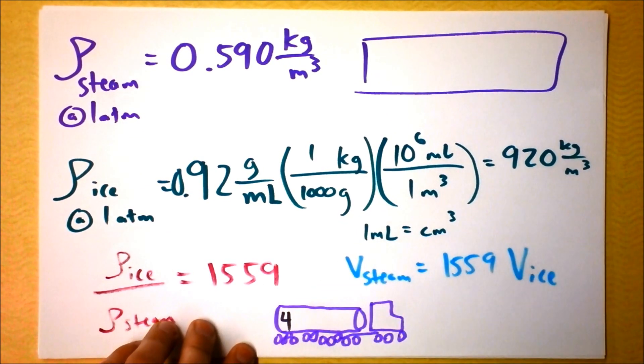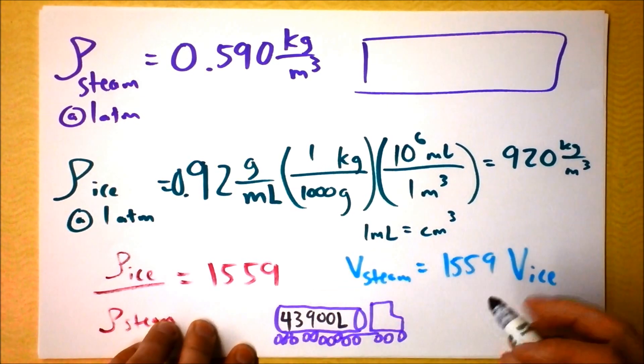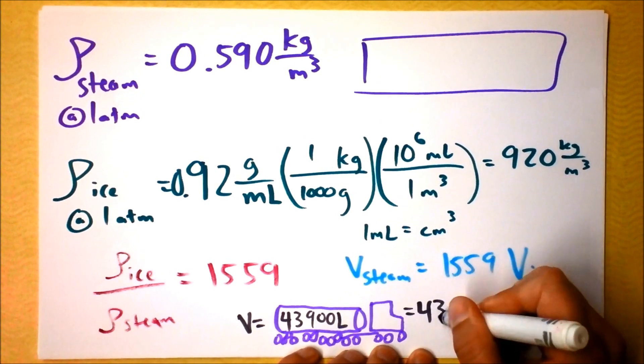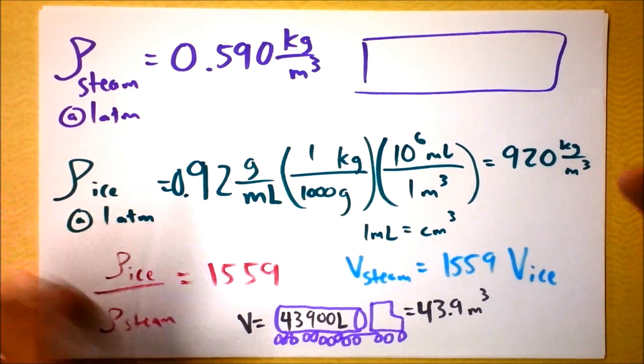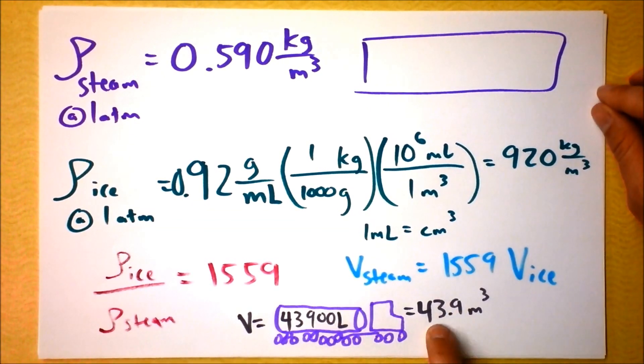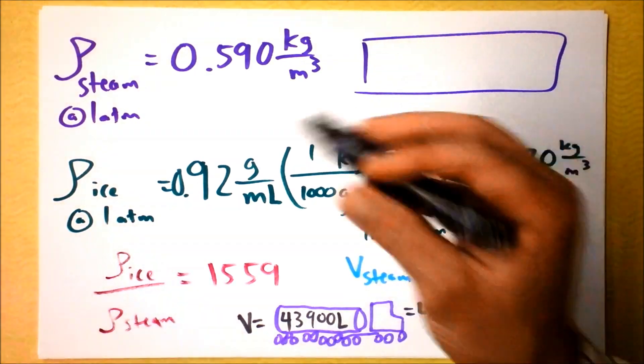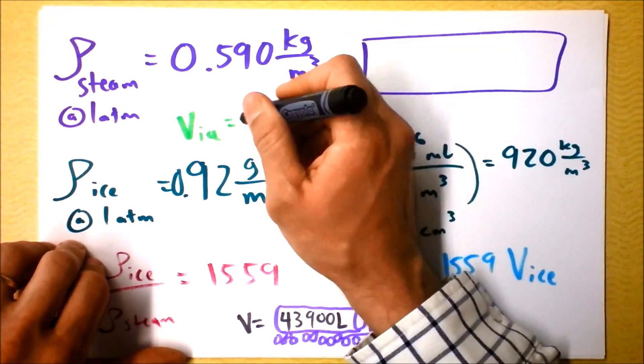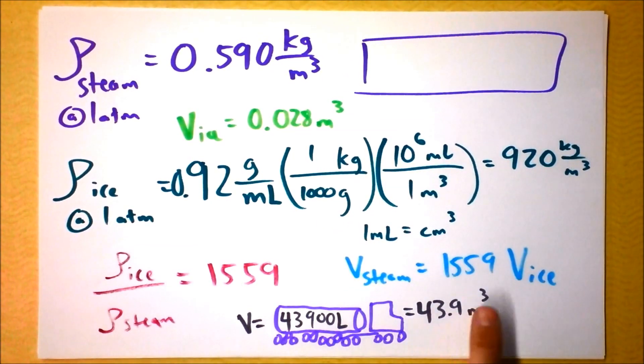Apparently the volume of the largest tanker truck that you can imagine is 43,900 liters. That's the volume of that tanker truck. But that's pretty quickly converted into just 43.9 cubic meters. So you could put that much steam in there. And I was wondering how big the ice would have to be then to have the same amount of mass. So I took this number and I divided by the ratio of the volumes, and I found a volume that's wait for it, wait for it. The volume of ice that you need is 0.028 cubic meters.